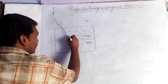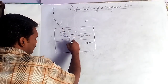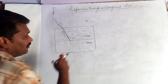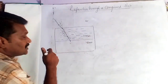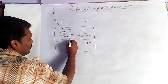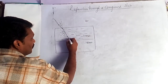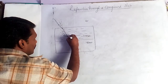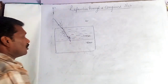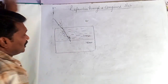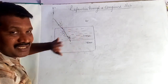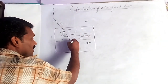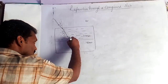Here we have to draw another normal. The interface is water and glass — the medium of refraction between water and glass. Consider this angle is R2. Compared with water, glass is a denser medium, so the ray again goes towards the normal.